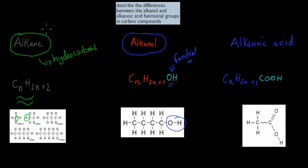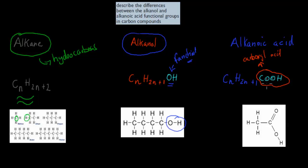For alkanolic acids, the formula is CnH2n+1, and the functional group is the carboxyl acid group — essentially carbonic acid. If it's by itself, we call it the carboxyl acid. The key topic for this video is to describe the differences between the alkanol and the alkanolic acid functional groups in carbon compounds.